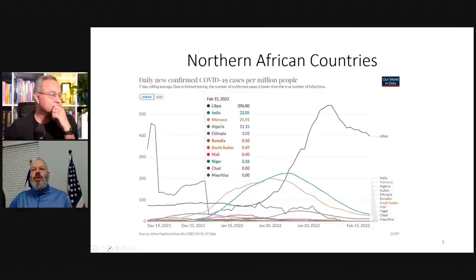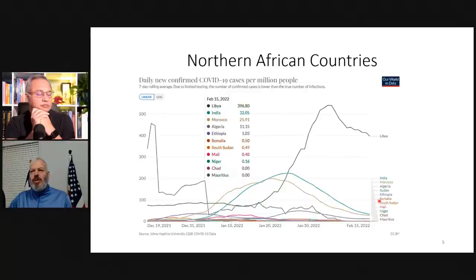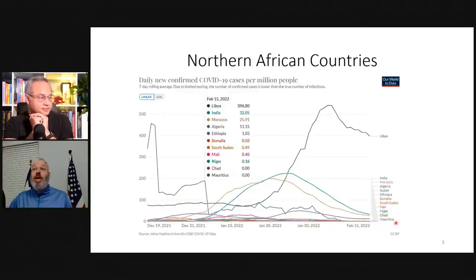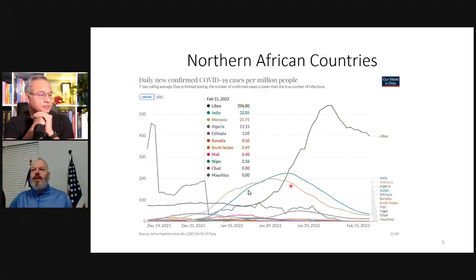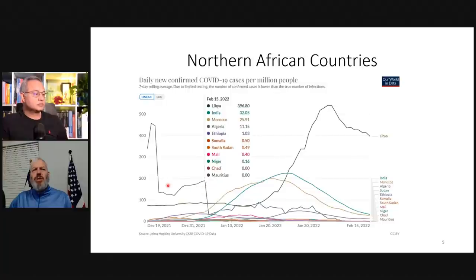Going further north, up on top we've got Libya. Again I have India as a reference. In the last group India was much higher, and now we have Libya as the highest one on the chart — 396.8 cases per million compared to India as a reference at 32 cases per million. What's going on with Libya? It's a wave — up and down very quickly. The timeframe is compressed, so the India curve looks more flattened out.